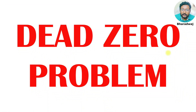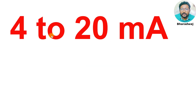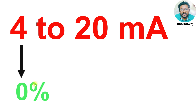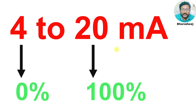In this video I will discuss the dead zero problem. In the previous videos, we discussed about 4 to 20 mA. The 4 represents the zero scale reading or 0% of the process variable, and the 20 represents the full scale value, which is 100% of the process variable.